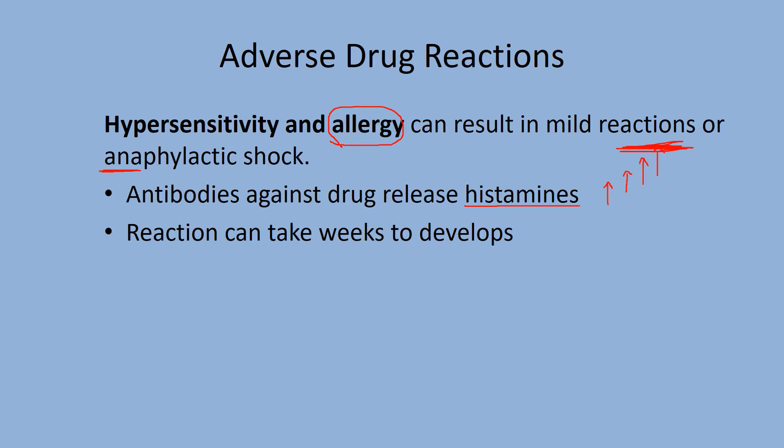Allergy reactions can take weeks to develop, as histamine levels need to rise to a certain point before you get a reaction. Anaphylaxis, however, is instant. For infants and toddlers, when you're introducing new foods, spread them out three to four days apart. Infants usually don't get anaphylactic shock from food allergies — they usually get a rash.